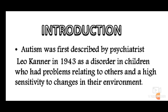What is autism? Autism was first described by psychiatrist Leo Kanner in 1943 as a disorder in children who had problems relating to others and high sensitivity to their environment. Basically, this disorder is a Neurodevelopmental Disorder.